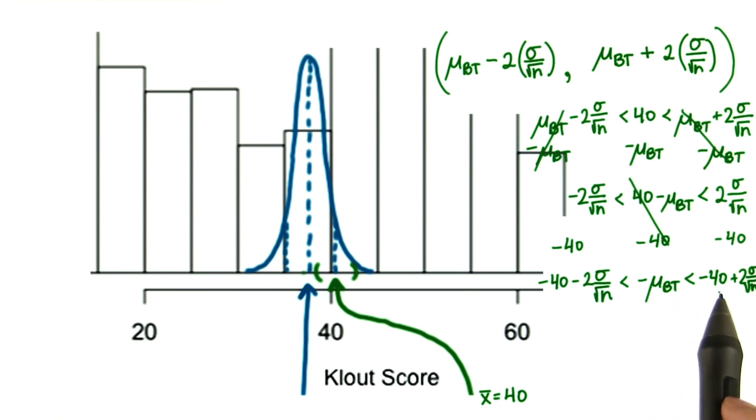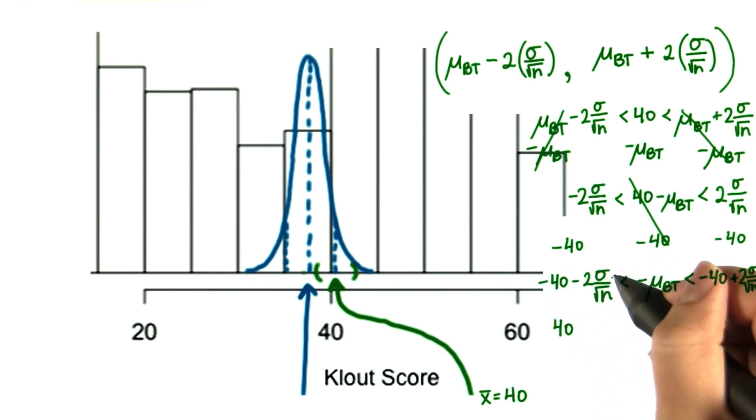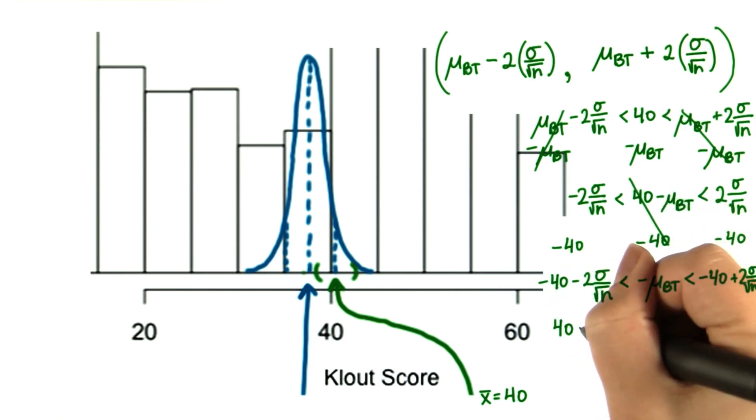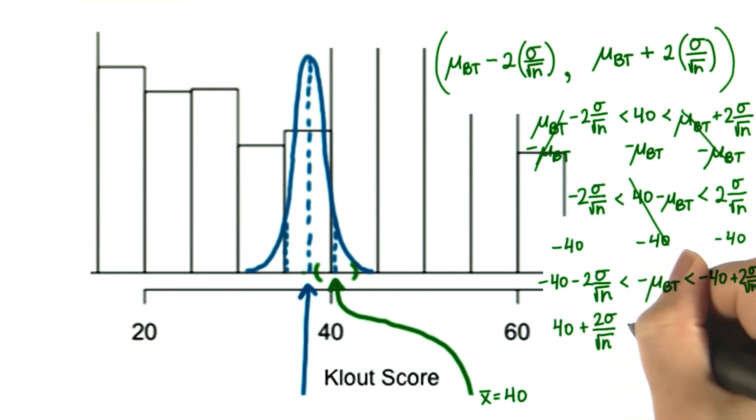When we multiply or divide by a negative number, these inequalities go the opposite way. When we multiply this by negative 1, we get positive 40 plus 2 times sigma over root n is greater than positive population mean is greater than positive 40 minus 2 times the standard error.